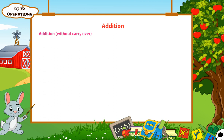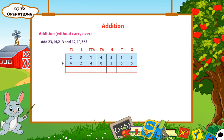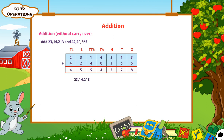Addition without carryover. Let's add 23,14,213 and 42,40,365. Write the addends as shown. Now, starting from the ones column, write the sum of the respective columns as shown. So, the sum of the given numbers is 65,54,578.